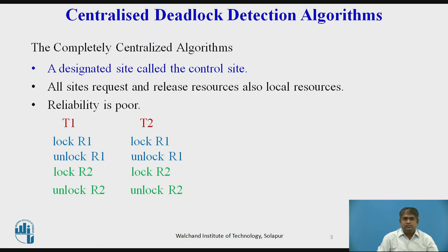The completely centralized algorithm is the simplest centralized deadlock detection algorithm. A designated site is called the control site, which maintains the wait-for graph of the entire system and checks it for the existence of deadlock cycles.